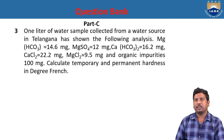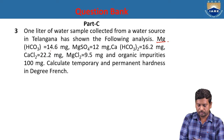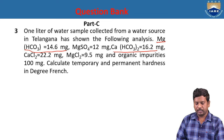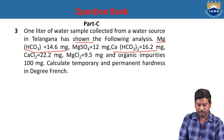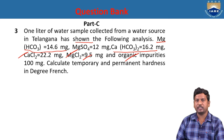Problem 3: One liter of water from a source in Telangana contains: magnesium bicarbonate 14.6 mg, magnesium sulfate (given mg), calcium bicarbonate 16.2 mg, calcium chloride 22.2 mg, magnesium chloride 9.5 mg, and organic impurities 100 mg. Calculate temporary and permanent hardness in degree French. Temporary hardness is caused by magnesium bicarbonate and calcium bicarbonate. Permanent hardness is caused by magnesium sulfate, calcium chloride, and magnesium chloride. Organic impurities do not contribute to hardness.